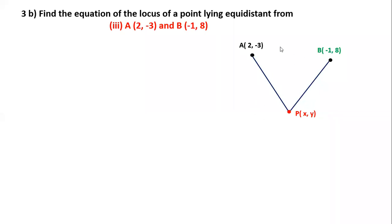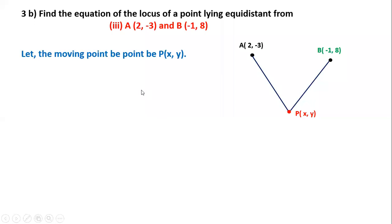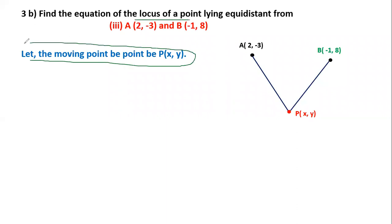We can make a figure. A and B and point P. If P is equidistant from A and B, we assume P. Locus is the line — you have to always write this. Let the moving point be P(x, y). We can write P(x, y).